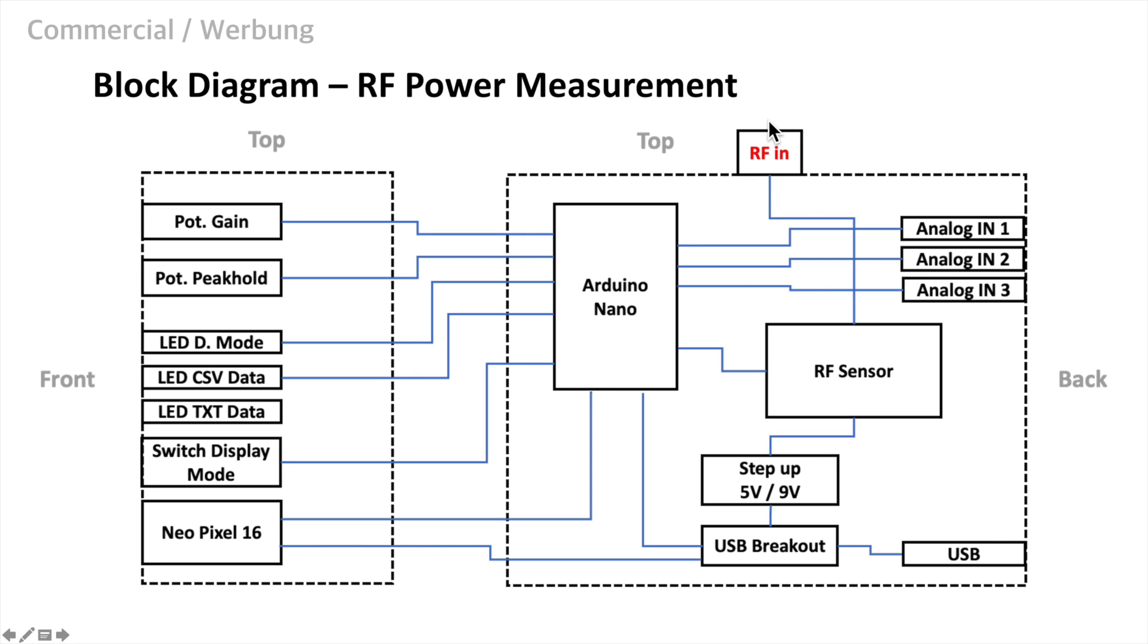Now let's have a look on the block diagram of our device. It shows already where the control elements and the electronics are sitting in our metallic case. On the left side we have the cover of our housing. On the right side we have the main body. On the top we have an N connector to feed in the radio signals. Inside the case the RF signals are fed into the RF sensor. The sensors DC output goes directly to an Arduino analog input.